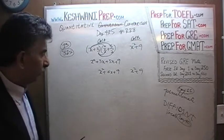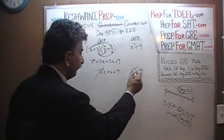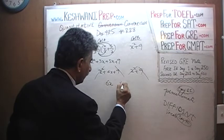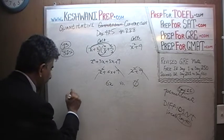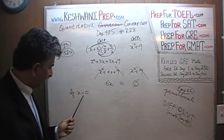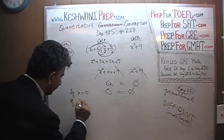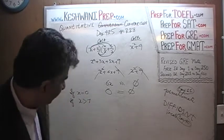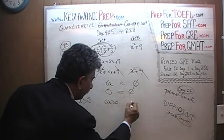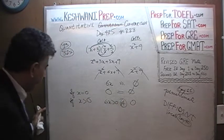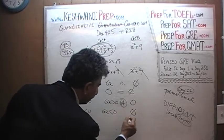Let's subtract x squared from both columns. I see 9 over there and I see 9 over there. Let's subtract 9 from both columns. What we are left with is 6x versus 0. If x happens to be equal to 0, then 6x equals 0. If x happens to be a positive number, then 6x is going to be more than 0, and the answer is A. If x happens to be a negative number, 6x is going to be negative versus 0, and the answer is B.